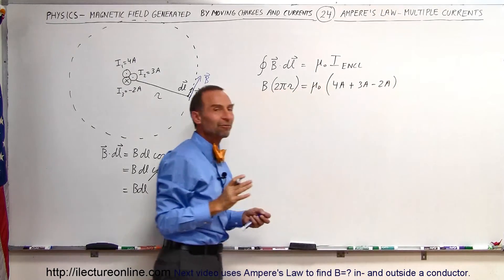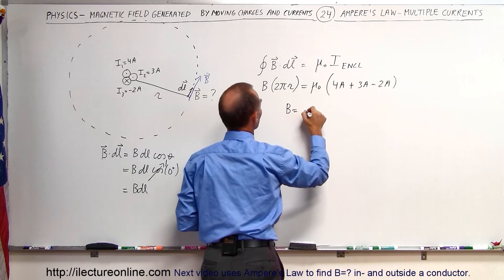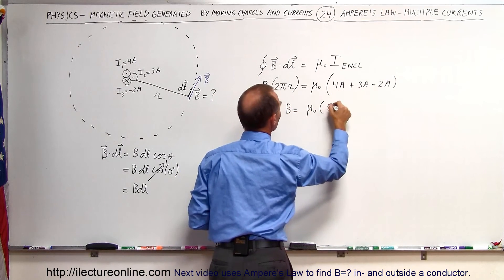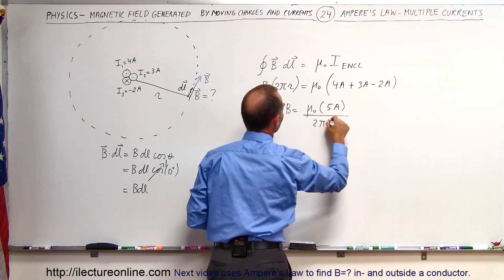And so that's how we find the magnetic field. So we can say that therefore, the B field is equal to mu sub nought times 4 plus 3 is 7 minus 2, which would be 5 amps with a total current enclosed, divided by 2 pi times the radius.